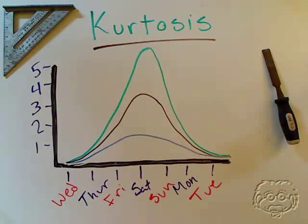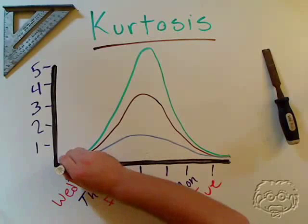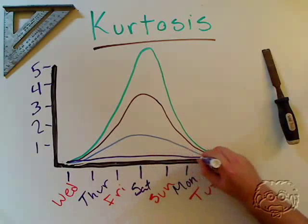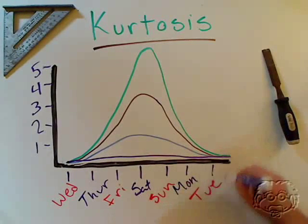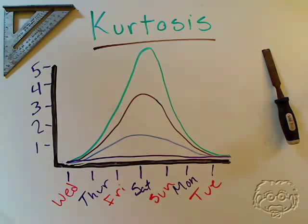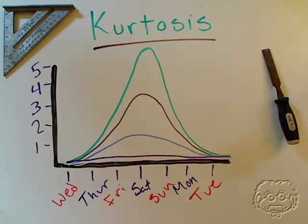If we had uniform distribution, we'd just pretty much have a flat line right across our graph. So kurtosis is talking about how far away we get from uniform distribution at the peak of our graph. And that's basically what we're talking about — pretty simple.